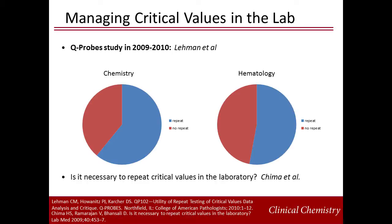There is great variability among laboratories with respect to practices for repeating critical results before resulting. A recent Q-probe study showed that 61% of laboratory surveys were repeating chemistry critical values, and another 53% were repeating hematology critical results. Today's instruments have improved precision and linearity compared to the instruments used in the 1970s when we first began the practice of calling critical values. A team at Kaiser Foundation Hospital in San Francisco retired their policy of repeating critical results and were able to improve the lab's efficiency and turnaround time. A six-month monitoring period showed no reportable patient care issues. Laboratories should consider the value of repeating the test versus having the result available faster for the clinical team to take action.